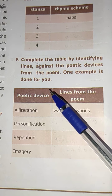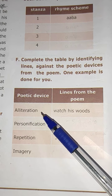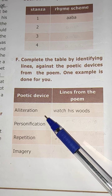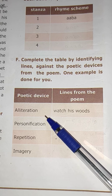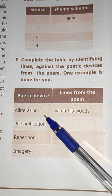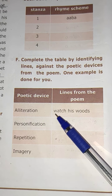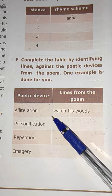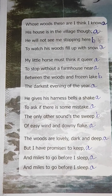Now let us know the poetic device: alliteration. Alliteration is the repetition of the same consonant sound at the beginning of words. For rhyming words, we look at the similar ending sound. But in alliteration, we look at the same consonant sound at the beginning — the beginning of two or more words in a set or series.